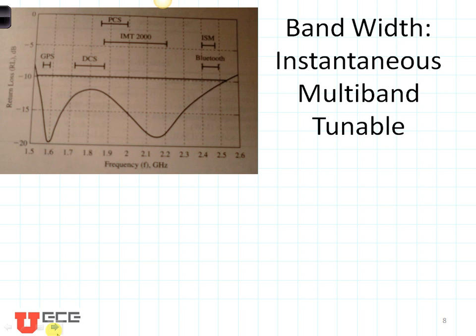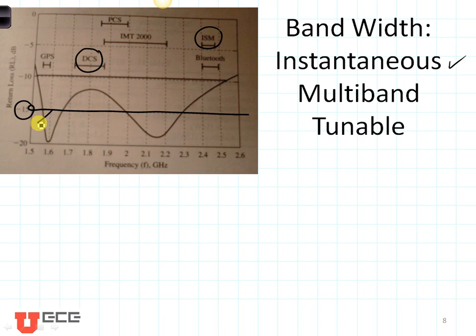We can define bandwidth several different ways. For example, if we have an application where we need to use all frequencies at the same time, we would be defining an instantaneous bandwidth. Applications where that might show up include a pulsed radar system. That's different from this application here, because we don't necessarily need DCS and ISM at the same time. In this case, the antenna is designed so it can use all of the bands. On the other hand, if we had chosen a return loss of minus 15 decibels, our antenna would only be functional in two individual multiple bands. Sometimes we have an antenna that we can tune over a variety of frequencies — that is a tunable antenna — and we define the bandwidth as its tunable bandwidth.